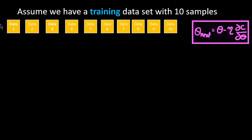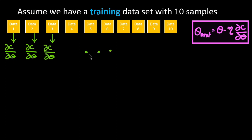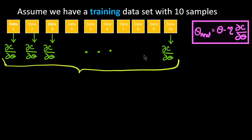Assume we have a training dataset with 10 samples: data 1, data 2, up to data 10. To find the gradient ∂C/∂theta, we find the derivative with respect to the first data, then the second, and so on for every data point in the entire dataset. We then find the average of all 10 derivatives.